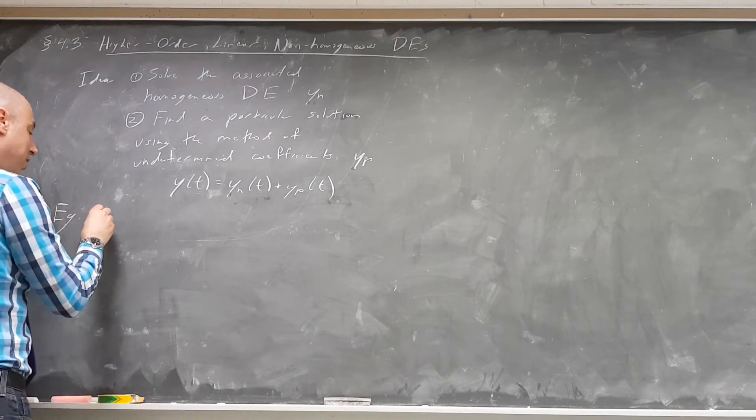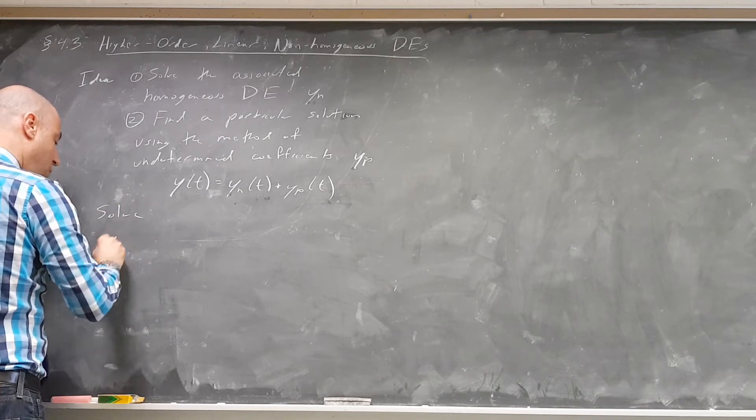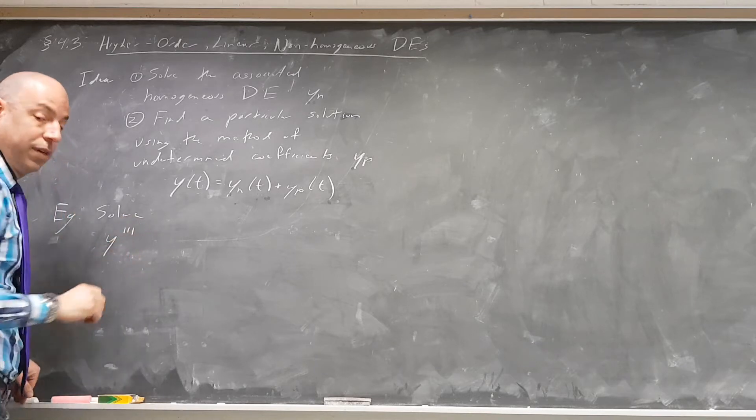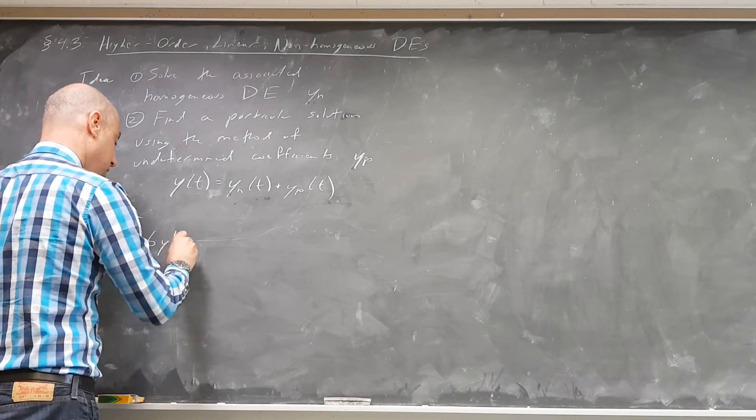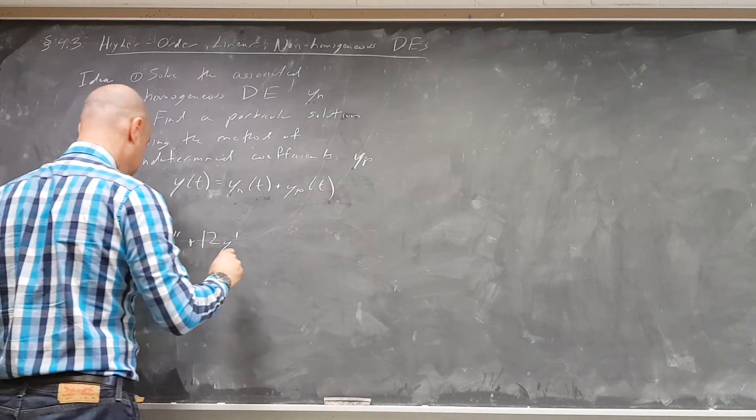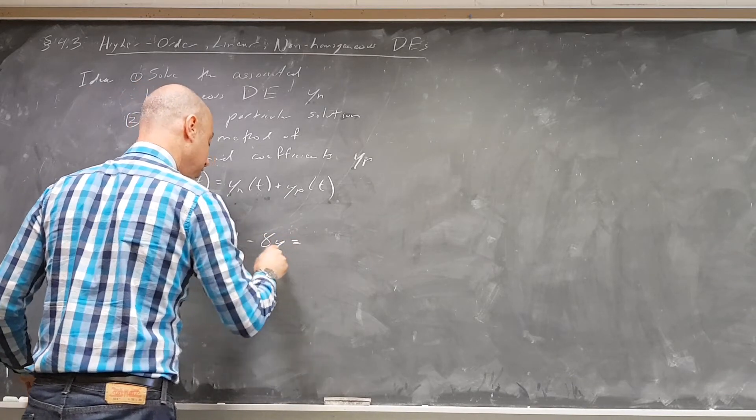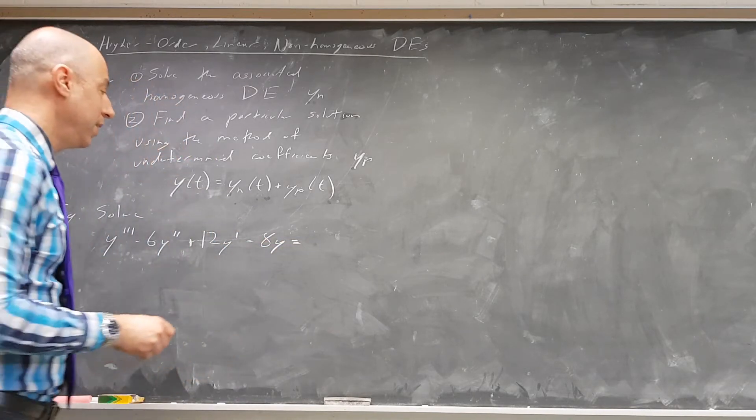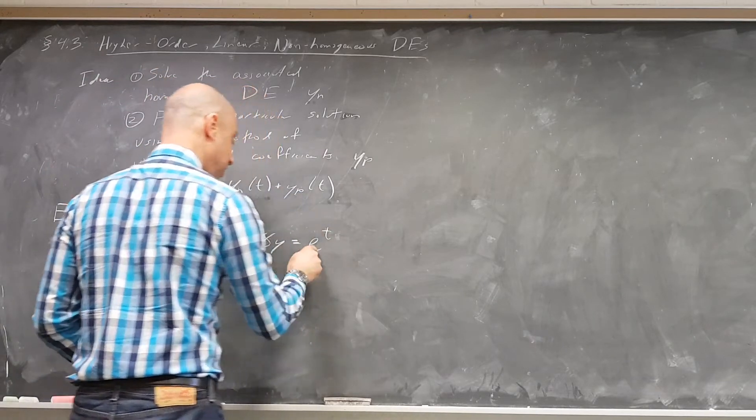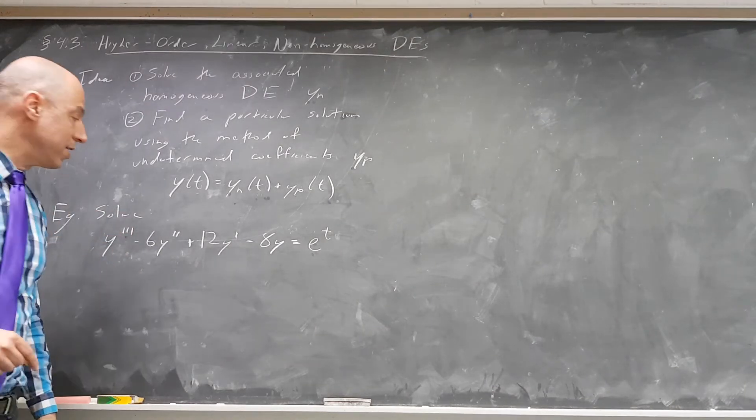First, I want to solve the following differential equation. y triple prime minus 6y double prime plus 12y prime minus 8y equals... So we would have done this last time if this was equal 0. I would like it to equal e to the t. So this is a non-homogeneous third-order linear differential equation with constant coefficients.